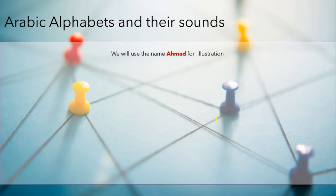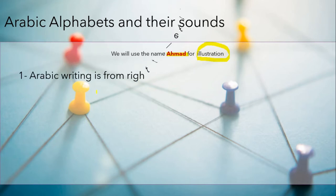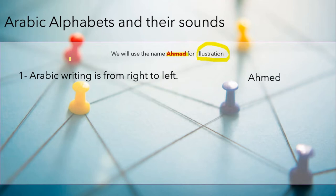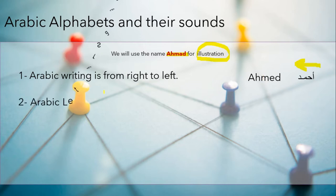Let's start with the Arabic alphabets. We will take the name Ahmed for illustration purposes — we don't want too many different names in our examples, so we would know the effects on the same name. Arabic writing is from right to left. Ahmed in English appears from left to right, while in Arabic it appears from right to left, exactly as shown in the presentation. We start with Alif, Ha, Mim, and Dal.